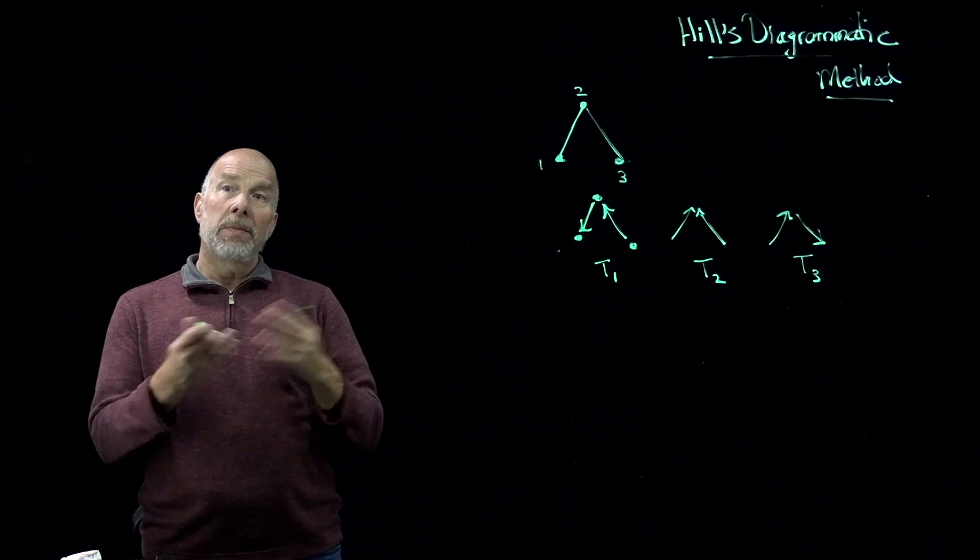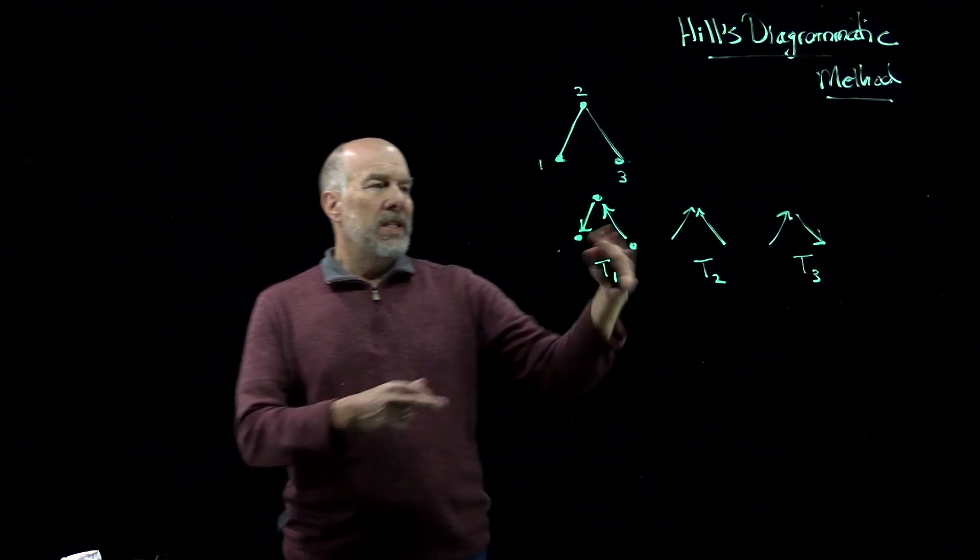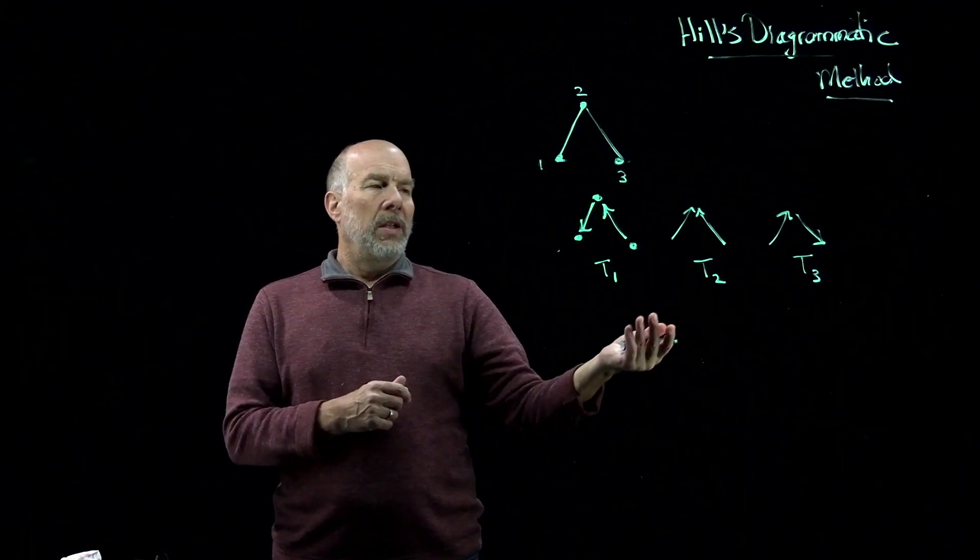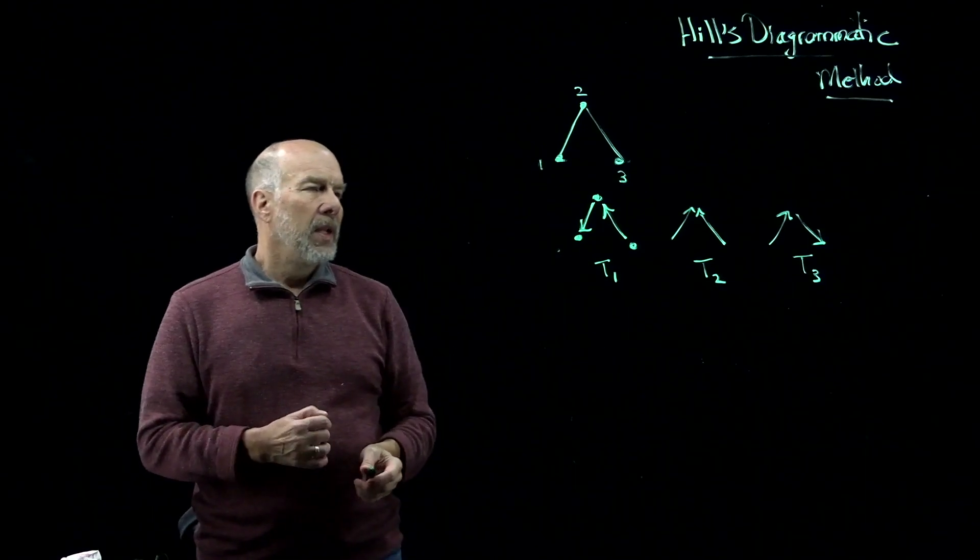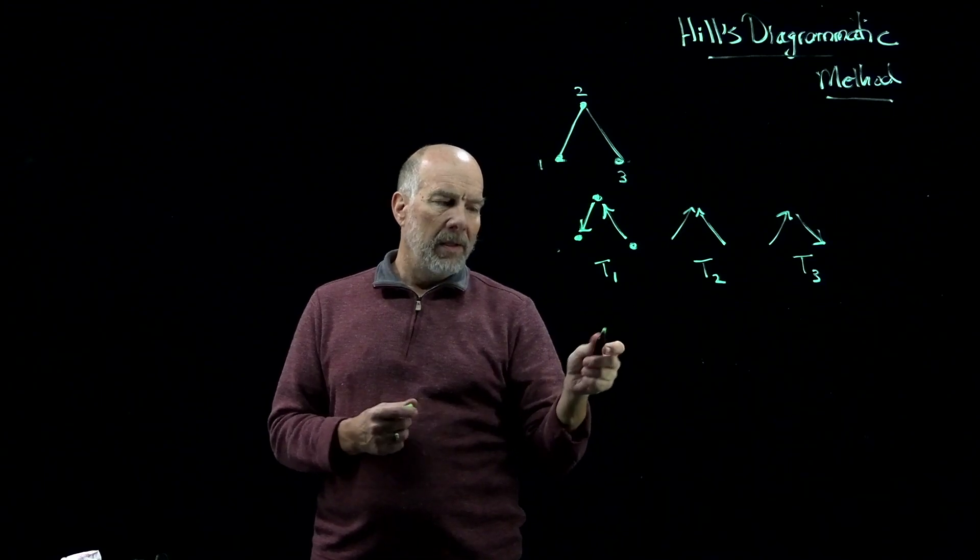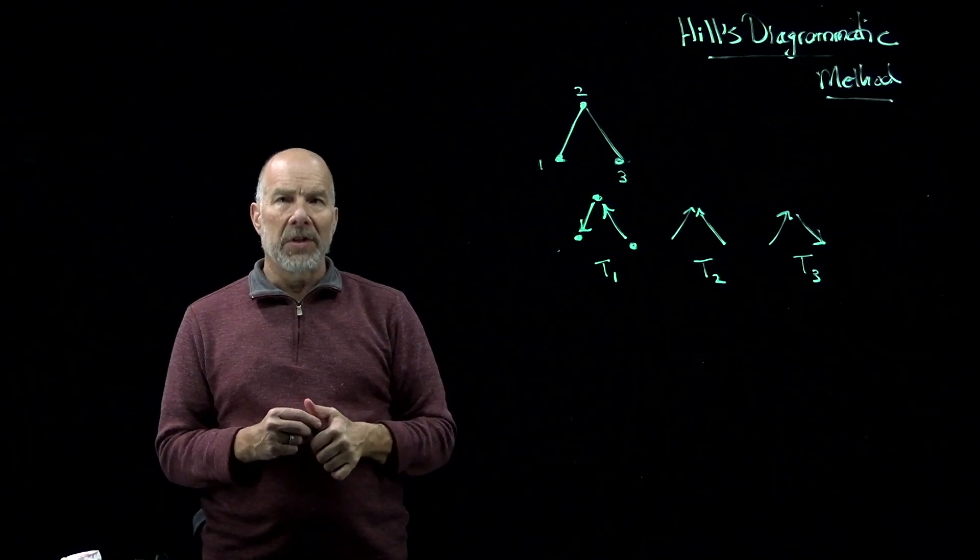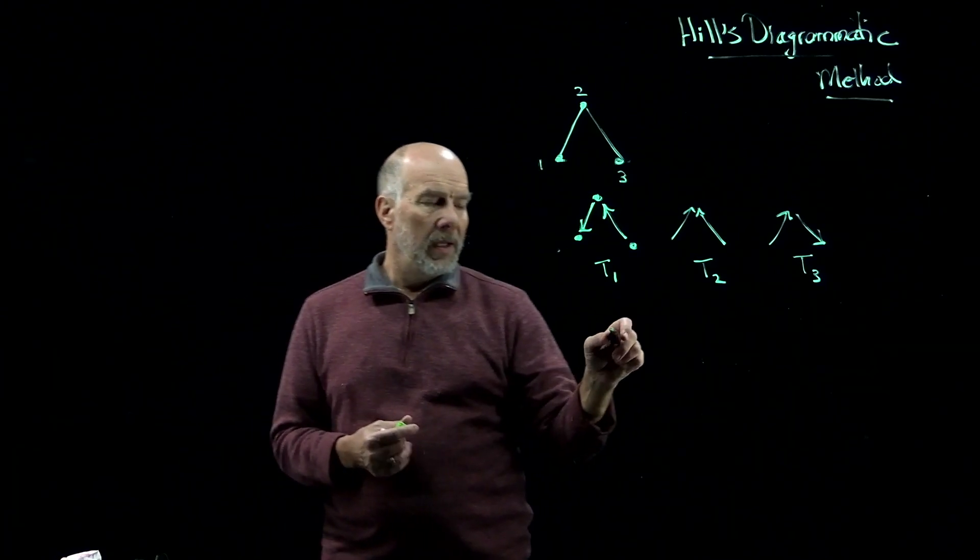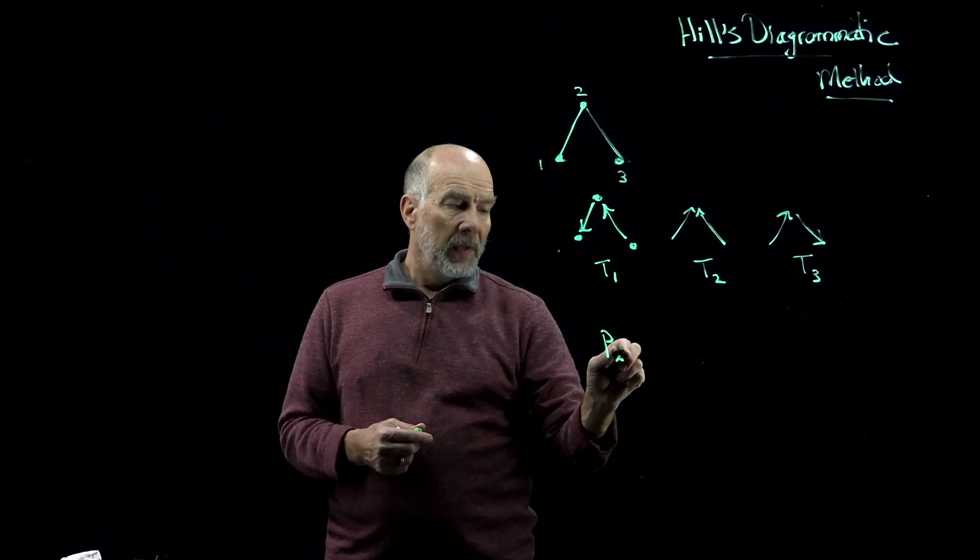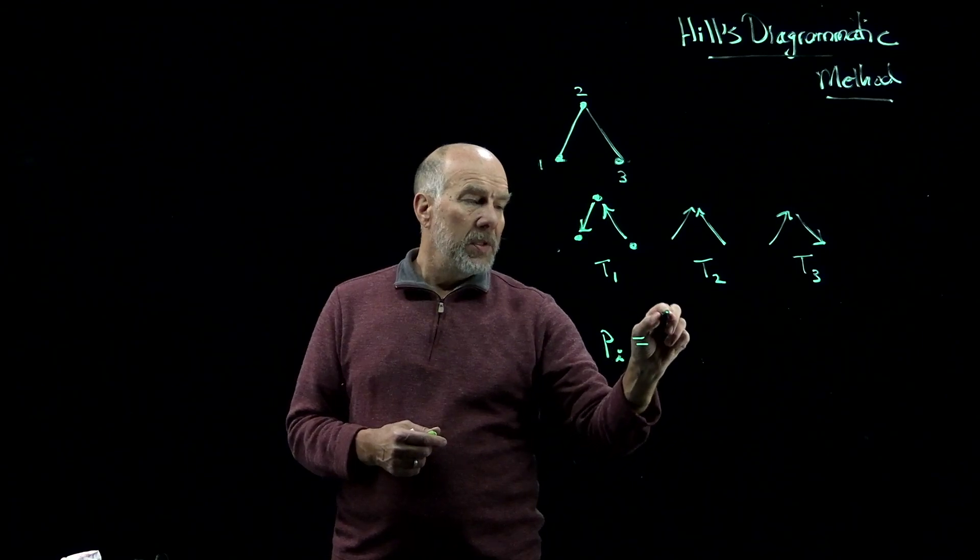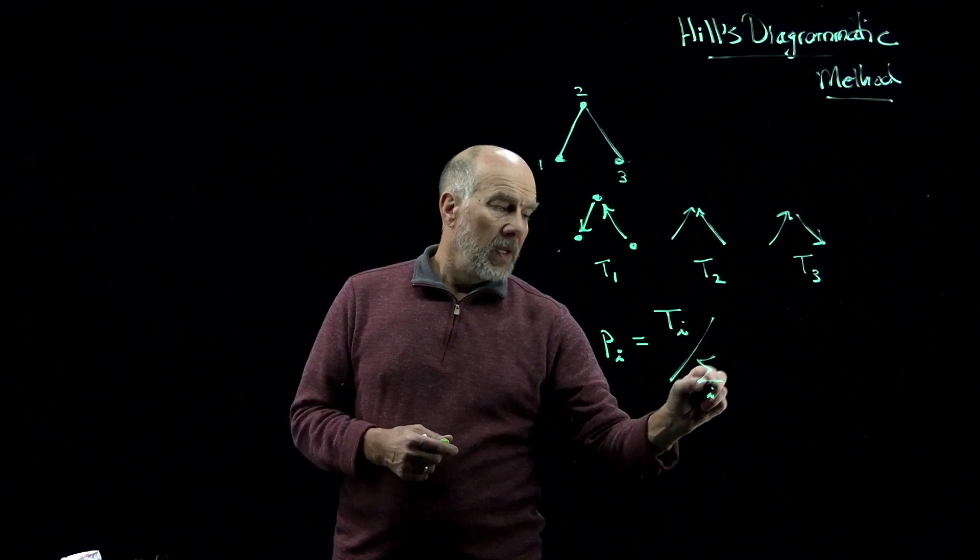So in each case, we have a spanning tree of the graph, and we have these directed arcs set up so that the tree has a root in whatever vertex that we're thinking about. And the theorem from Hill's diagrammatic method, sometimes referred to as Kamol-Garhal's matrix tree theorem, is that the probability of steady state of being in any one of these states is equal to the tree value divided by the sum of all the trees.